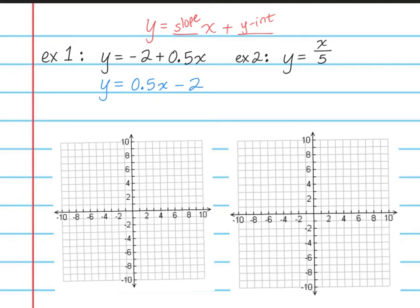It's looking a little better now. The only thing I notice is that this is not written as a fraction, so I'm going to rewrite 0.5 as a fraction. 0.5 is the same as 5 tenths, which is the same as 1 half. So if I were to rewrite this, we would get y equals 1 half x minus 2. Now it's written as something I'm used to seeing.